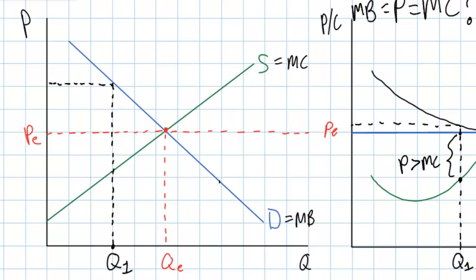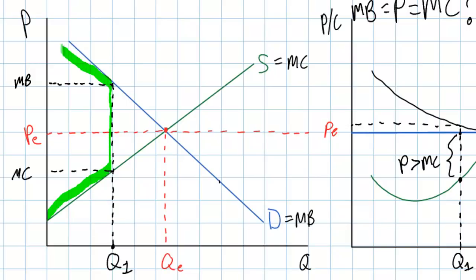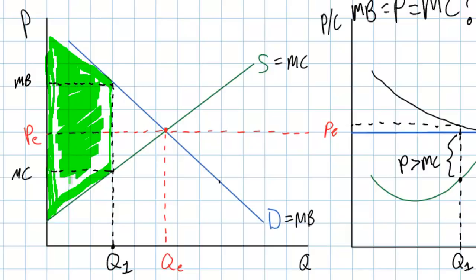If the price were PE yet firms produced only Q1 units, the marginal benefit consumers get from Q1 is greater than the marginal cost imposed on producers. The total sum of consumer and producer surplus is less than what is achievable at QE — this is an allocatively inefficient level of output because total welfare is less than what it could be with a greater quantity.